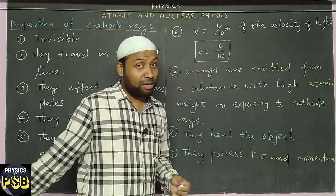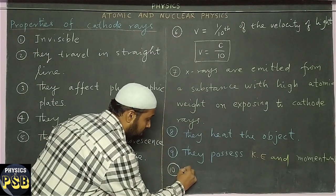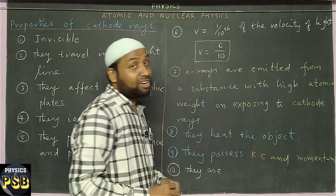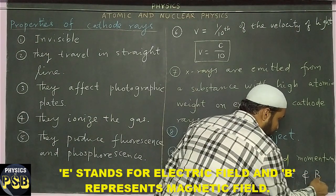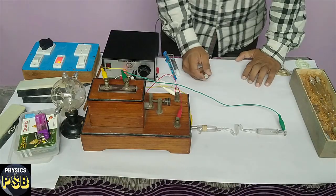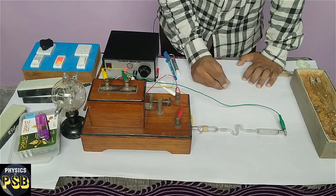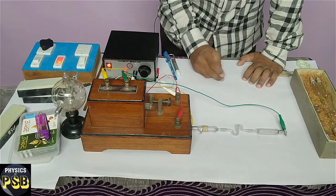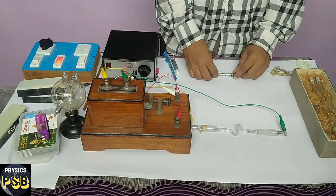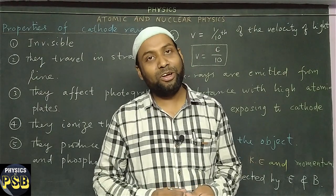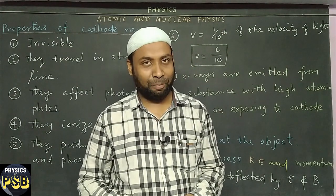One important property I forgot to mention: cathode rays are deflected by electric field and magnetic field. I will now show you how the magnetic field deflects the beam in the discharge tube. I turn off the lamp and bring a magnet near to it — you can see deflection where I placed the magnet. This shows that the magnetic field affects the beam. I hope this video is useful; if you have any doubts related to the topic, kindly put your question in the comment section. Thanks for watching.